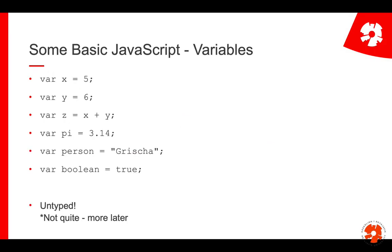Then of course we can have variables. JavaScript is weakly typed - for now we say it's untyped, though it's not quite true and we'll get into detail later. If you look at the definitions of variables, you see that all I use is 'var'. I never say what kind of type it is - I don't say that this is a number or this is a string. So you just say var, give it a name, and a value. You can have numbers, floating point, strings, booleans.